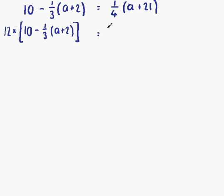And on the right-hand side again, so that the fraction stays true, we need to multiply both sides by the same amount. So 12 times 1 quarter brackets a plus 21. And close our big brackets.